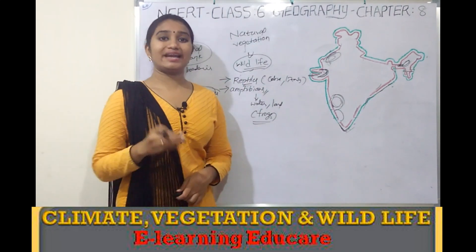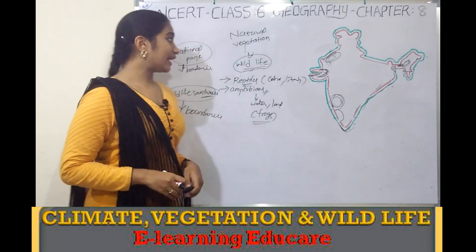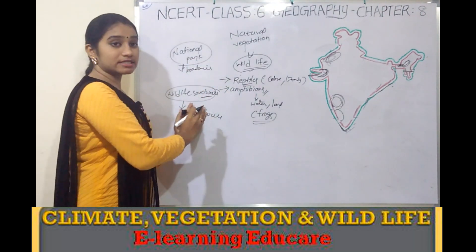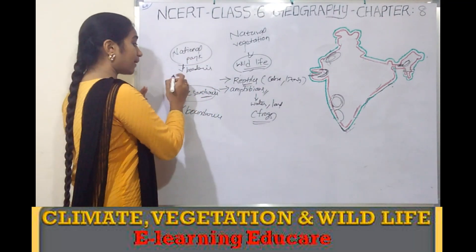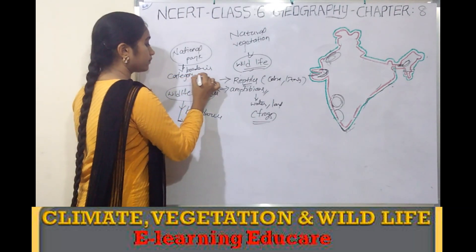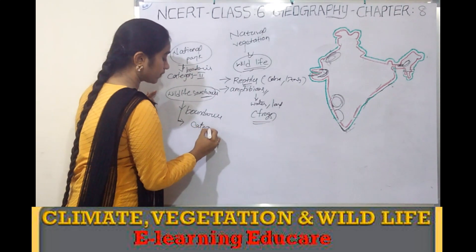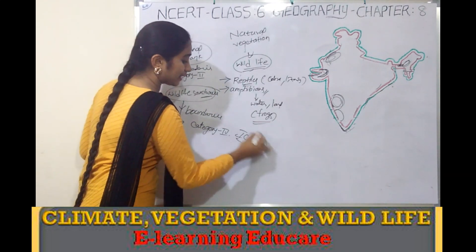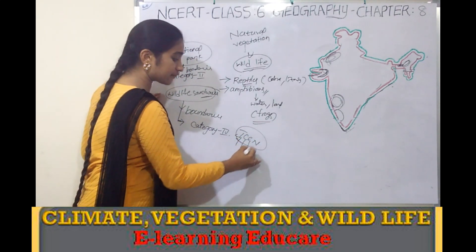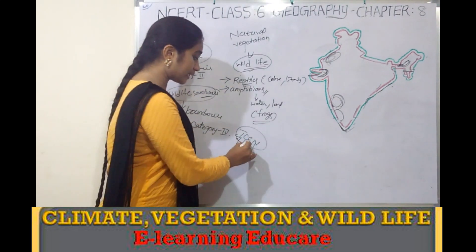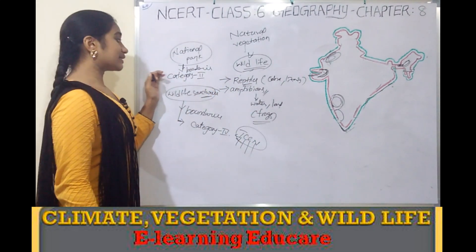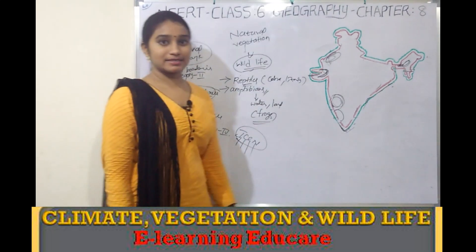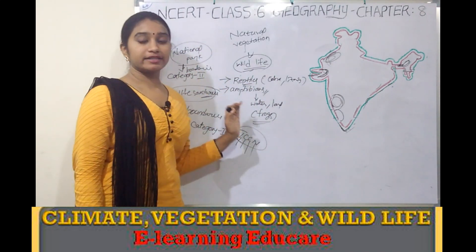Both national parks and wildlife sanctuaries come under the Wildlife Protection Act 1972 and fall under the Category of Protected Areas. IUCN — the International Union for Conservation of Nature — has declared this Category of Protected Areas classification.